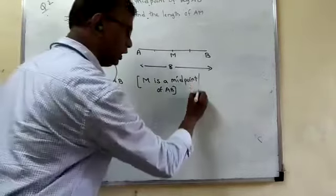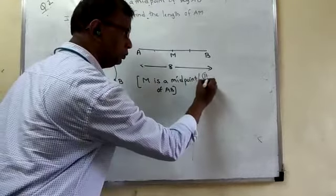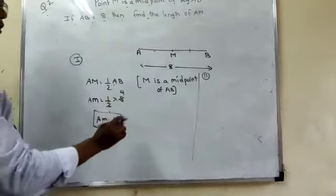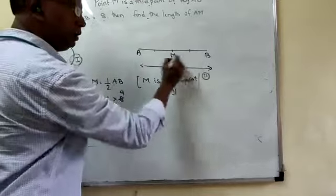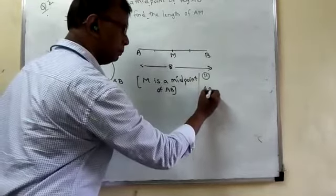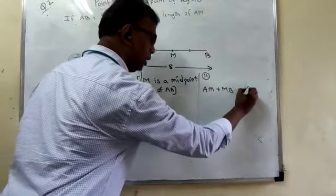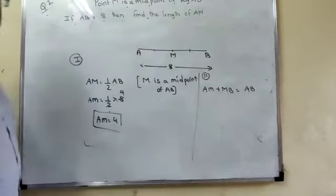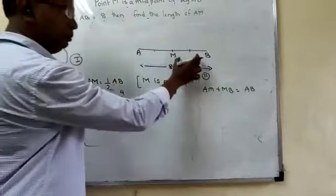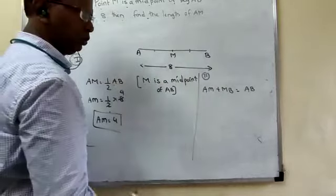I am using second method now. You can use any one method, it's up to you. Second method now. If M is a midpoint of AB means what? We can say AM plus MB is equal to AB.